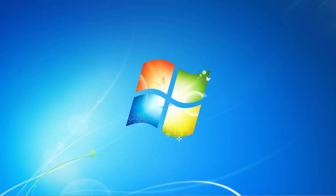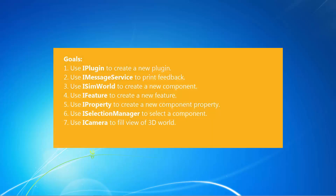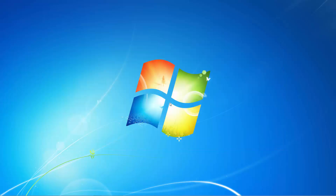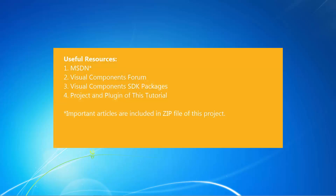Hello, this is William from Visual Components. In this video, I'm going to show you how to create a simple background plugin for a Visual Components 3D product. For example, I'm going to show you how to print feedback to the output panel, create a new component in the 3D world, select that component, and edit the camera of the 3D world using the .NET API. If you're new to the .NET framework, you can go to the MSDN network to learn more about it. You can go to our forum at forum.visualcomponents.com to ask questions, and refer to our SDK packages to learn more about the .NET API. If you want a link to the project and plugin we're going to make in this video tutorial, just check the video description.